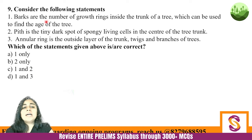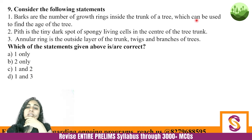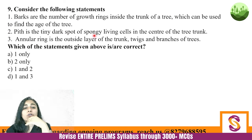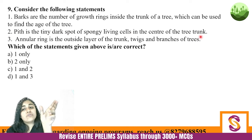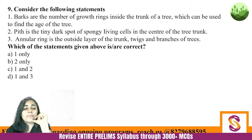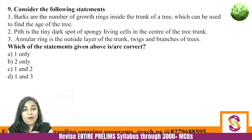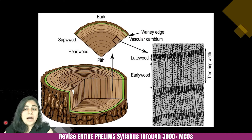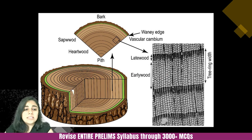Next question: Consider the following statements. Statement one: Barks are the number of growth rings inside the trunk of a tree, which can be used to find the age of the tree. Statement two: Pith is the tiny dark spot of spongy living cells in the center of the tree trunk. Statement three: An annular ring is the outside layer of the trunk, twigs, and branches. Which of the given statements are correct? Let's look at a cross section of tree bark. The outer woody coating is actually called the bark.